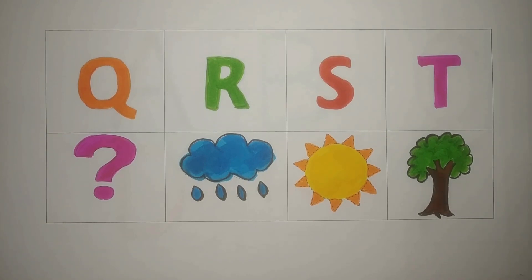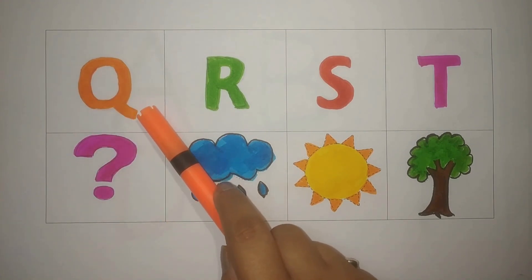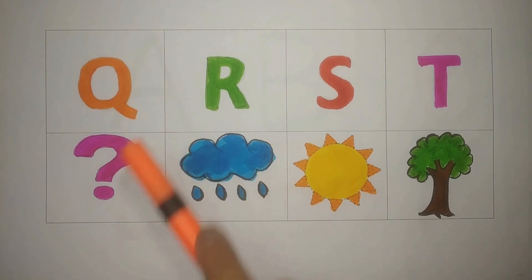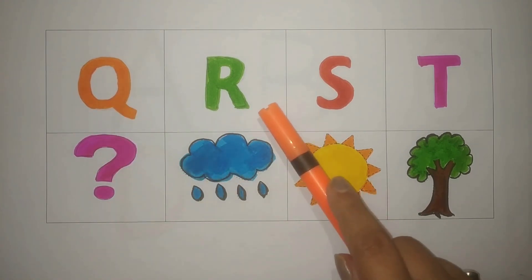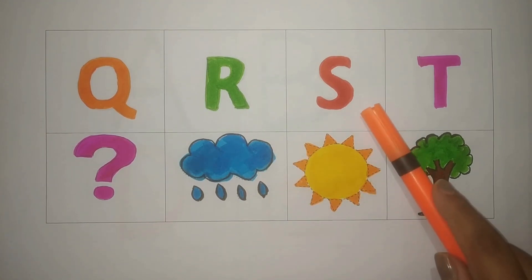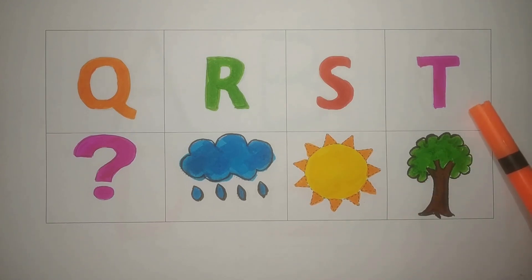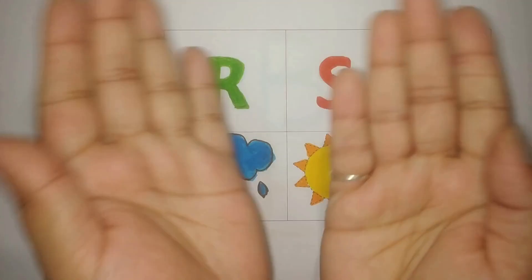Let's revise. Chalo phir se kerti hai. Q, orange, Q for question mark. R, green, R for rain. S, red, S for sun. And T, pink, T for tree. Simple.